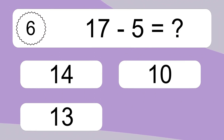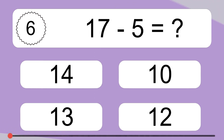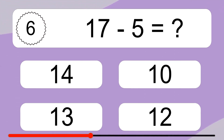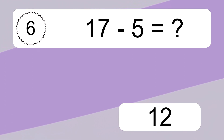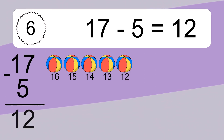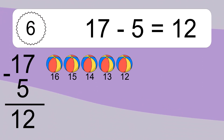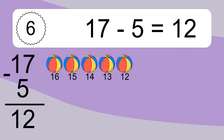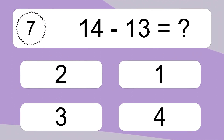17 minus 5 equals what? 17 minus 5 equals 12. Let's count it. 16, 15, 14, 13, 12.